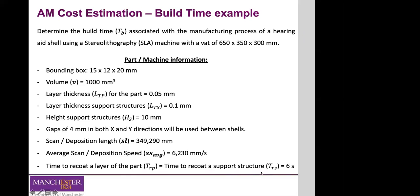If a similar question appears in an exam or assessment, this is the information typically provided: average scan speed (which depends on the system), total scan deposition length, and general part dimensions. The average scan speed can be calculated but is normally given.